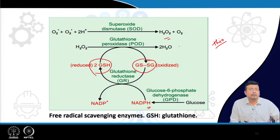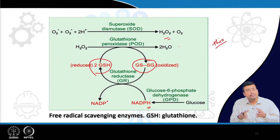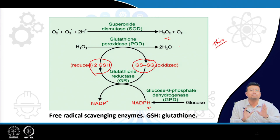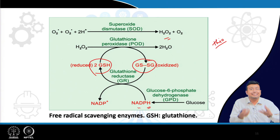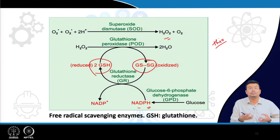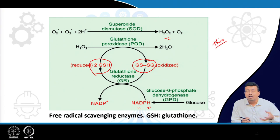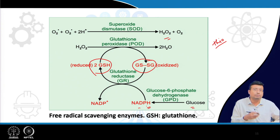Free radicals are produced not only by NADPH oxidase but from multiple cellular sources — mitochondrial respiration, oxidative drugs, and more. However, the glutathione system is the major source by which all free radicals can be scavenged. If there is a deficiency of NADPH, there will be less reduced glutathione, less scavenging of free radicals. NADPH is generated from glucose by glucose-6-phosphate dehydrogenase — so deficiency of that enzyme is the root problem.